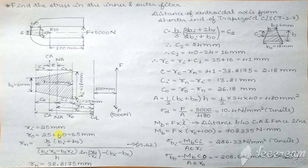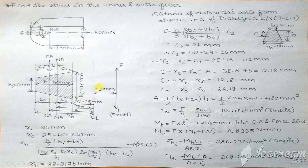From the figure it is given that Ri, the radius of the inner fiber, is 25 mm. R0 is the radius of the outer fiber. R0 is measured as Ri plus the depth of the beam, that is Ri plus 40. So it is 25 plus 40, which gives R0 = 65 mm.